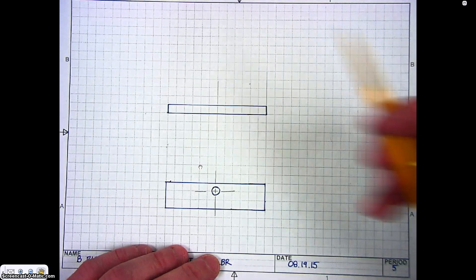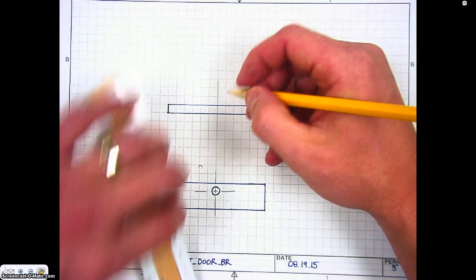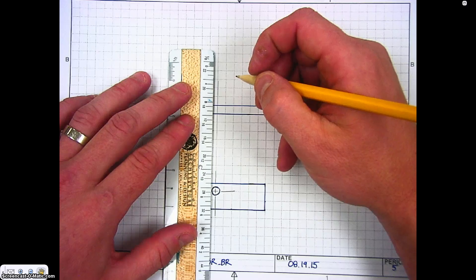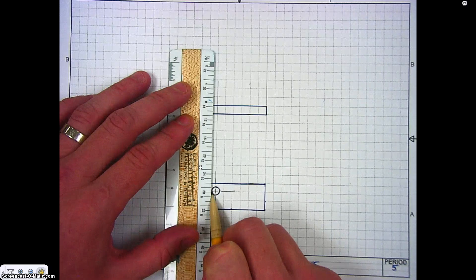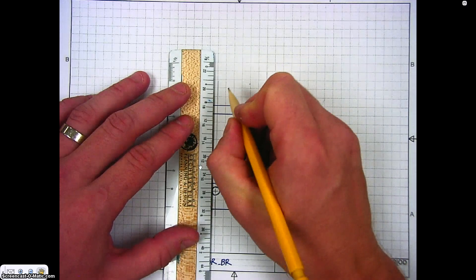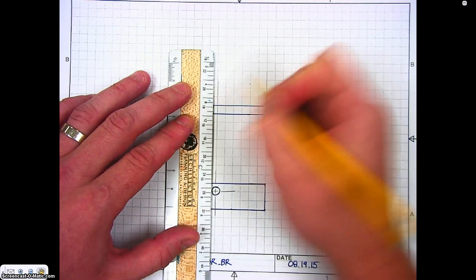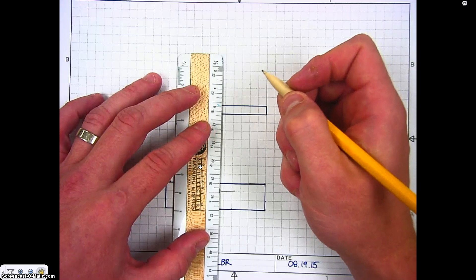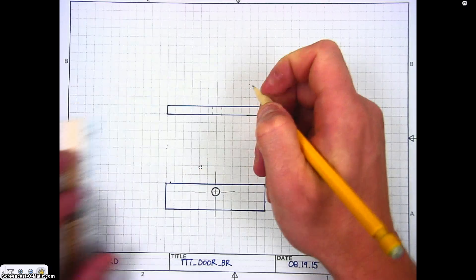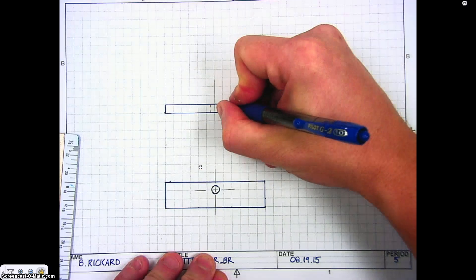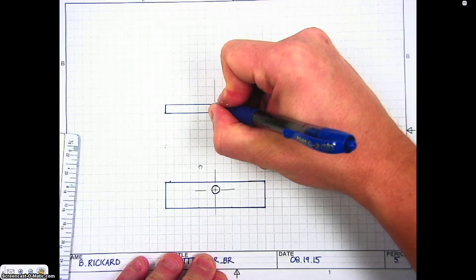The last thing we need to do is represent the hole that goes through this object. We have a center mark. I'm going to take my straight edge and try to make it as straight as possible. Basically, I'm projecting this hole up to this other view. I'm just going to draw two dashed lines—those lines are called hidden lines, and they represent the hole that goes through our object.